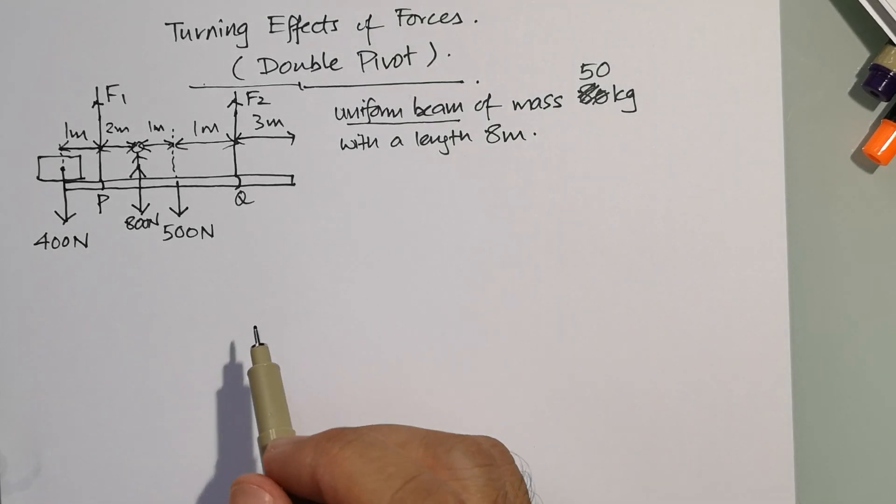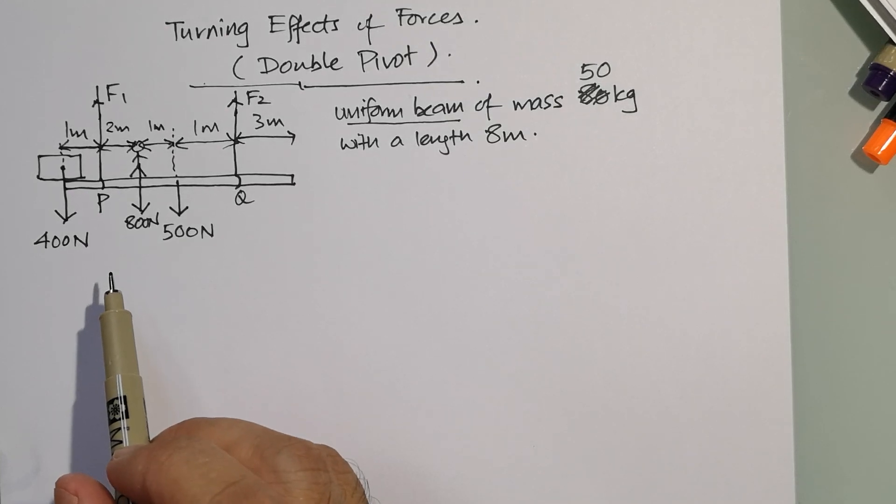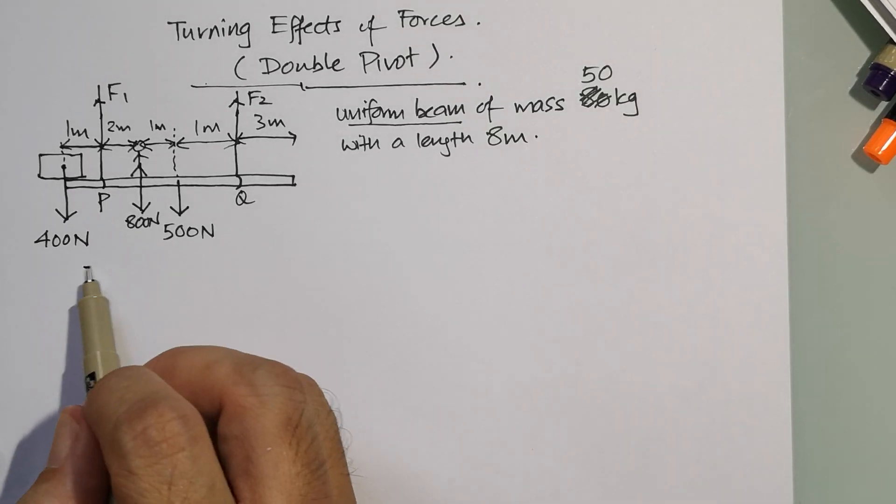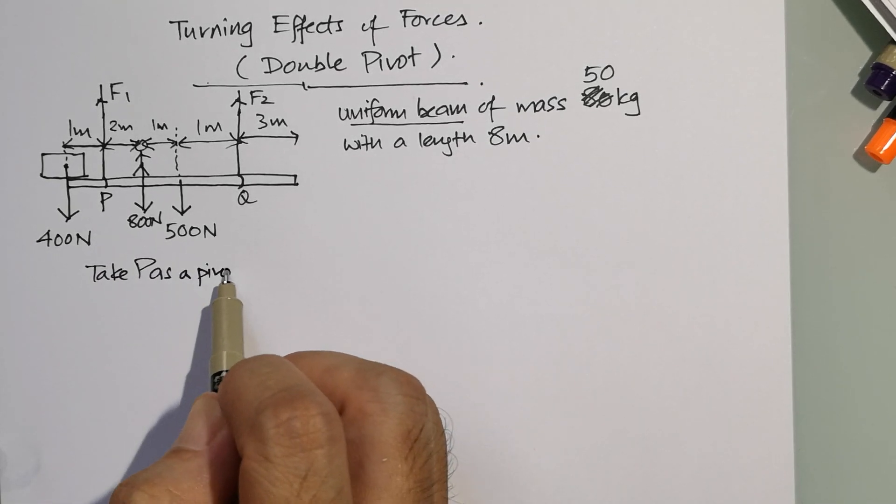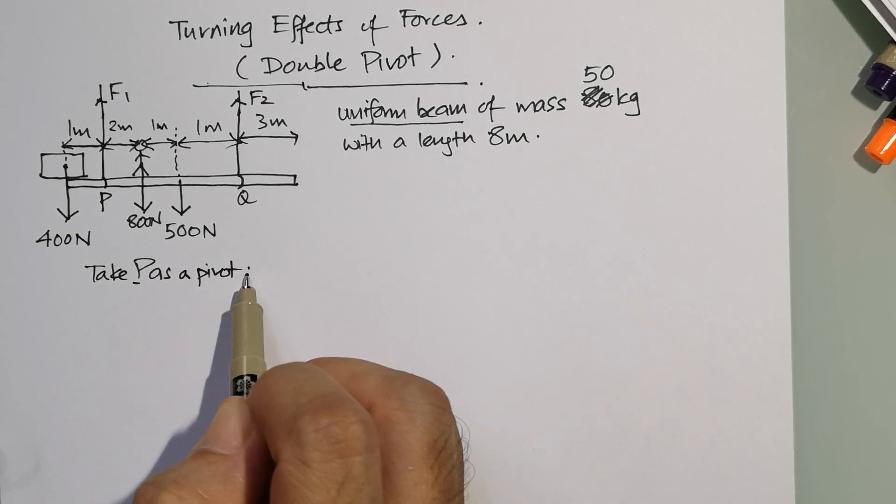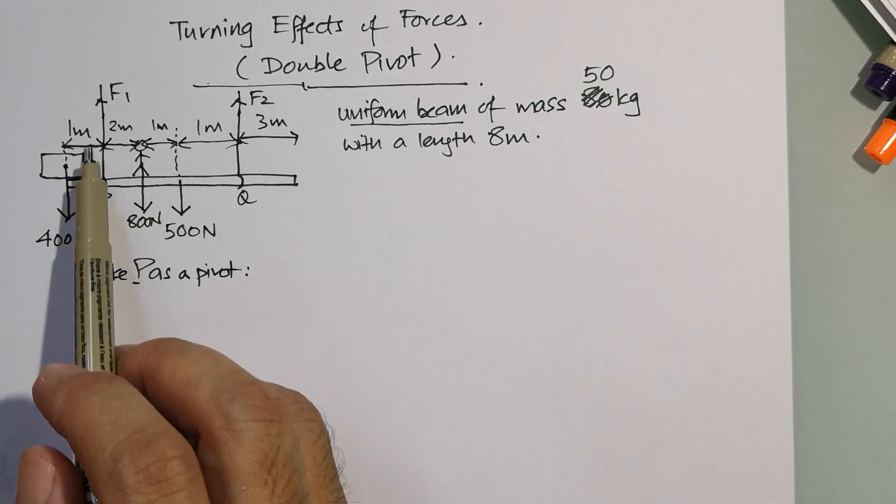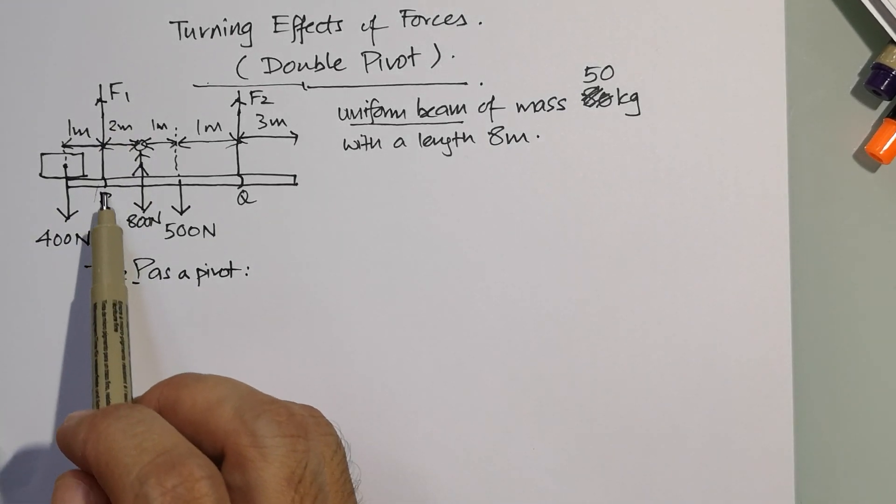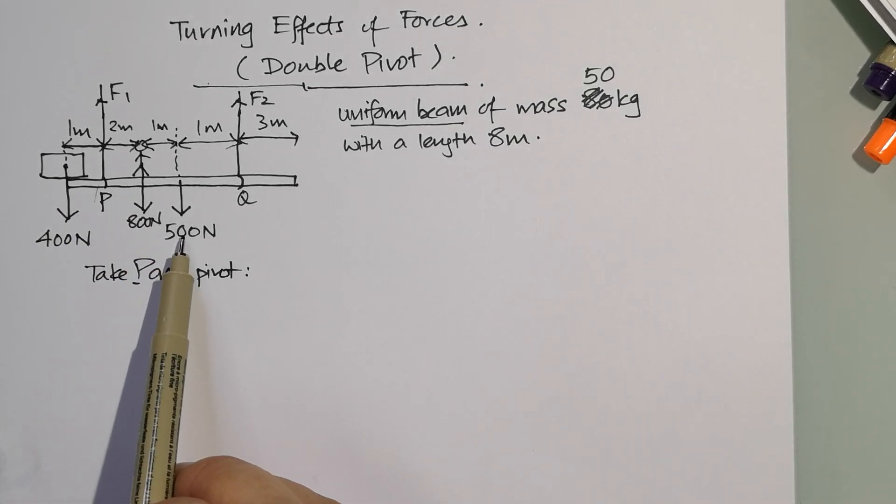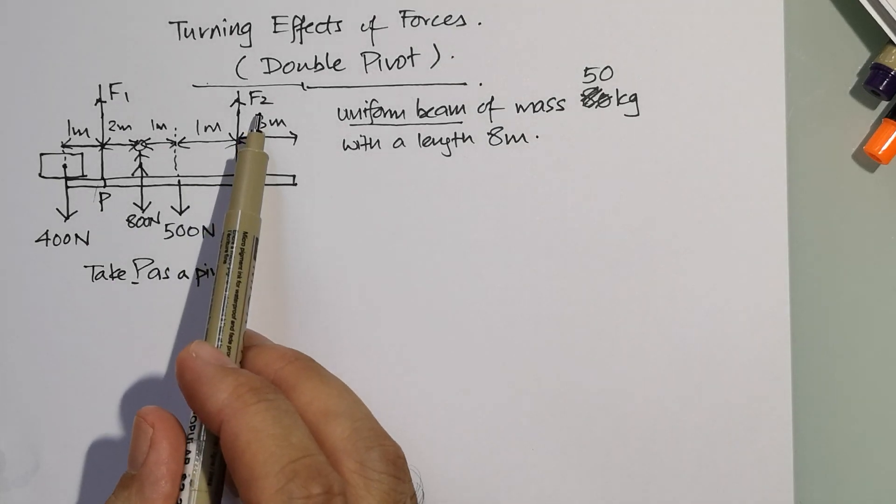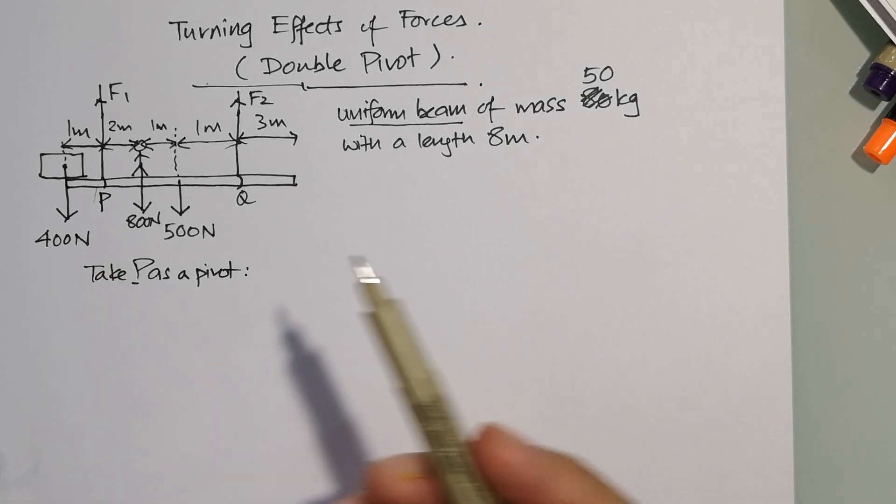So once you take P as a pivot, you ignore force one. You just literally take this as the point. You will consider the 400, the 800, the 500, and F2 as the forces in play with respect to point P.